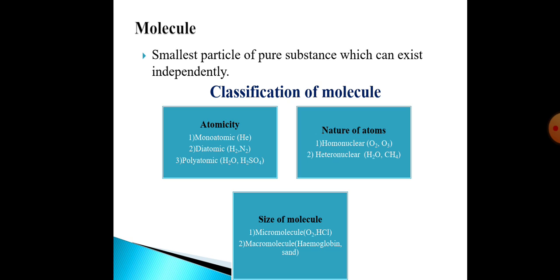We can also classify molecules on the basis of the nature of atoms. If similar types of atoms are present in a molecule, it is known as a homonuclear molecule — for example oxygen gas. If atoms of different elements are present in a compound, it is known as a heteronuclear molecule — for example HCl, where one atom belongs to hydrogen and one atom belongs to chlorine.